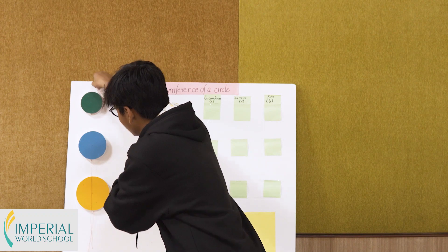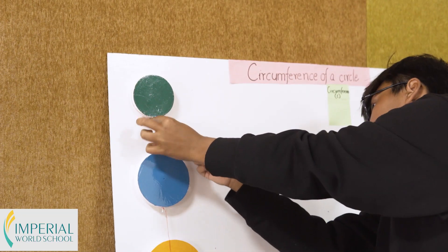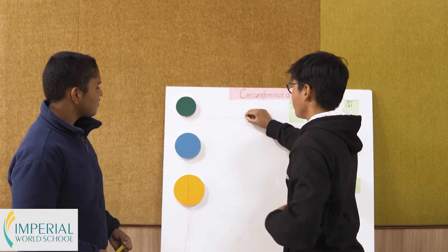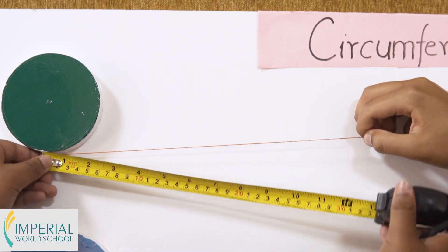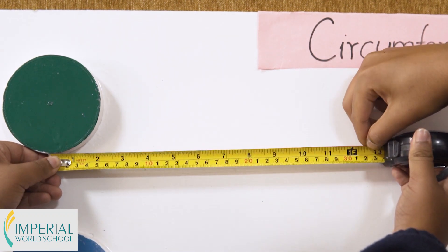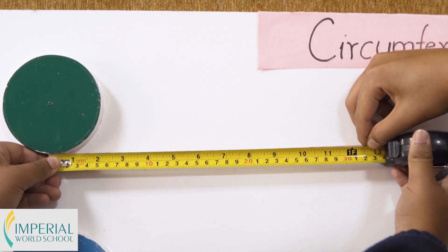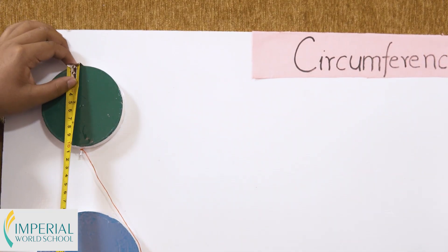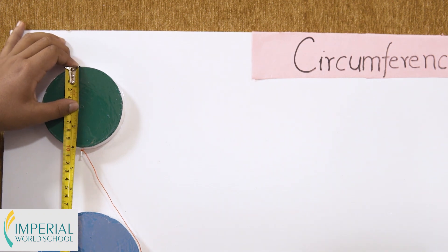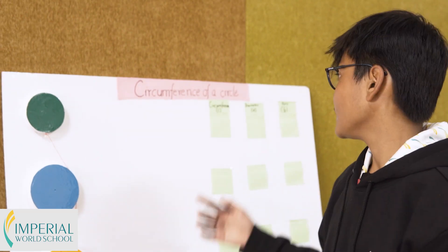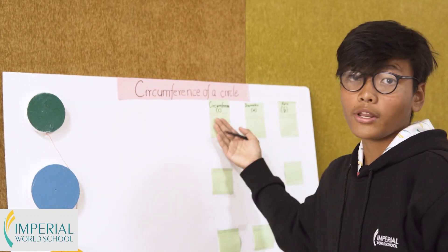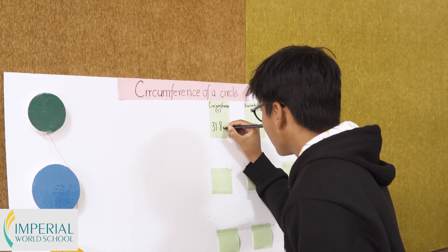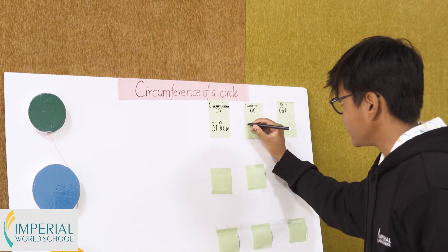We're going to measure the circumference of the circle using a thread. As you can see it exactly covers up the circumference of the circle. Rivas, can you help me measure this thread? As you can see it is exactly 31.8 centimeters. Now let's measure the diameter. As you can see the diameter is 10.1 centimeters. So the circumference is 31.8 centimeters and the diameter is 10.1 centimeters.